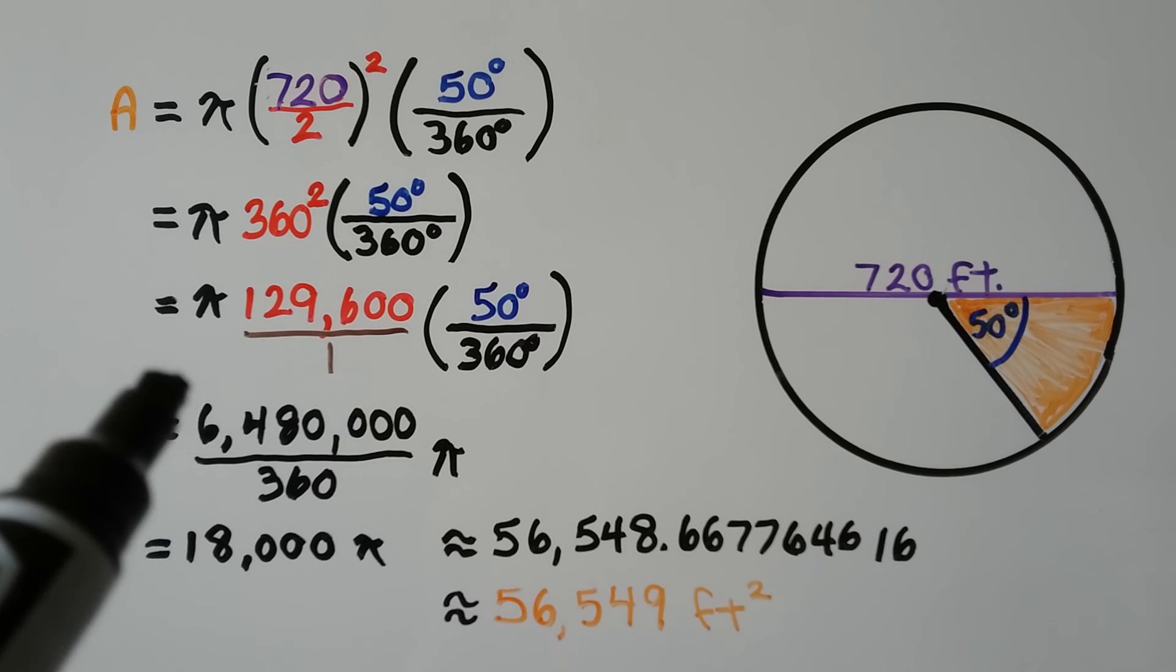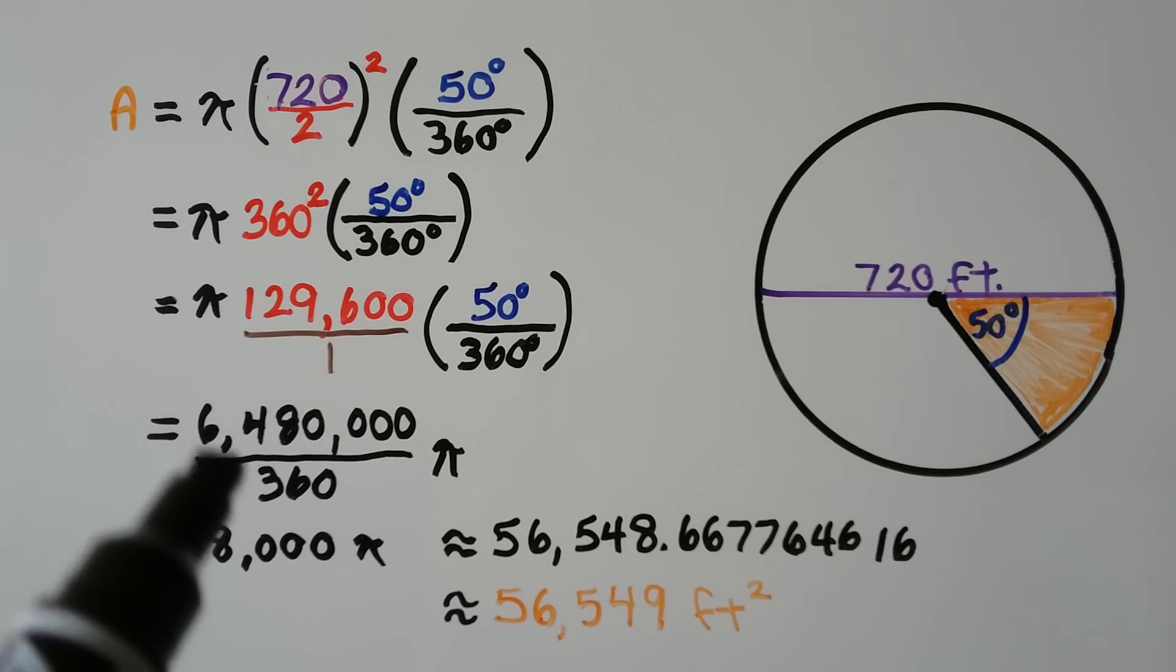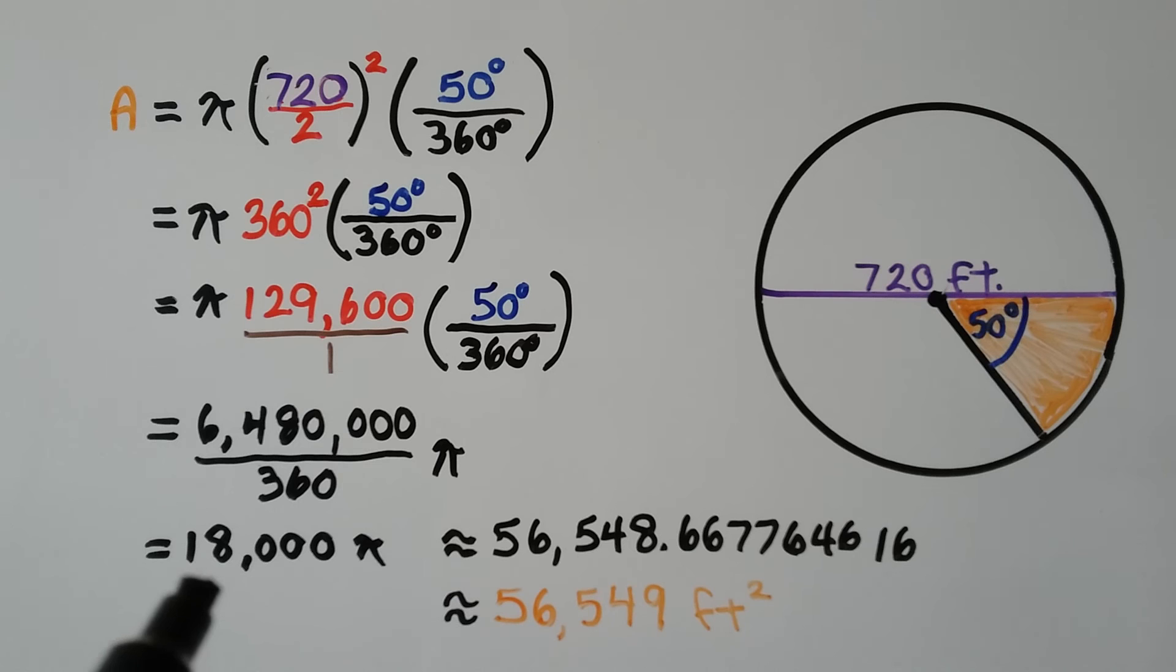We divide the 6,480,000 by 360 and we get 18,000 pi. We multiply the 18,000 by pi and we get approximately this nice long decimal number that we can round to 56,549 feet squared. That's the area that is watered when the sprinkler rotates through an angle of 50 degrees.